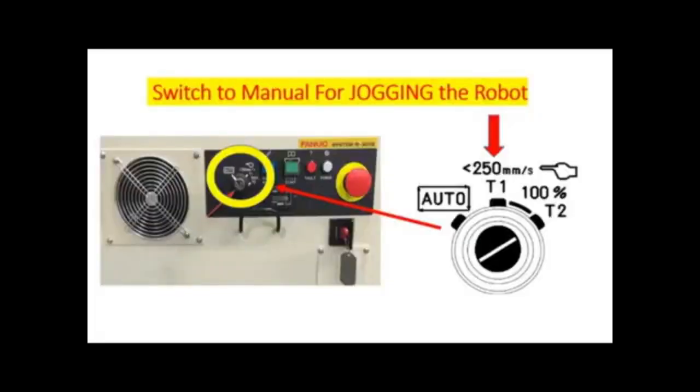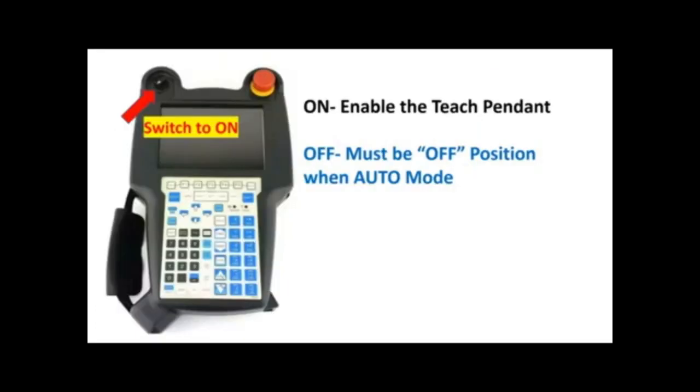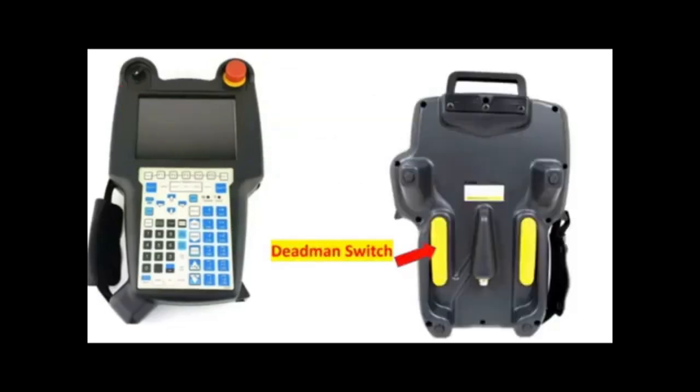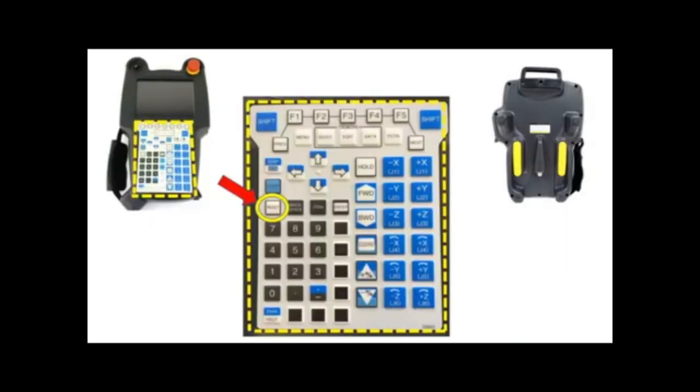First thing first, we're going to put the controller in manual mode and switch on the touch pendant to enable. And then press the dead man switch in the center to override the safety circuit of the door, and then press the reset button to clear the alarm.